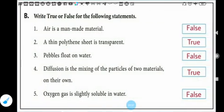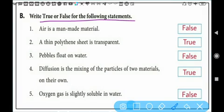Now the next is: write true or false for the following statements. Air is a man-made material. Is air man-made material? No, it is false.